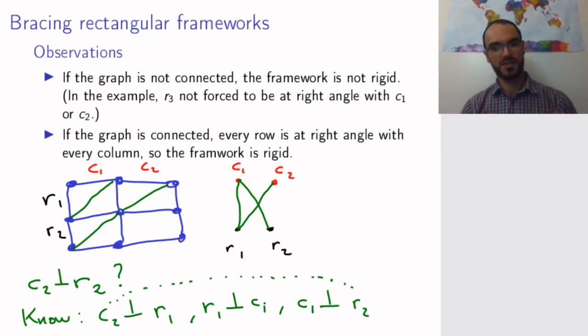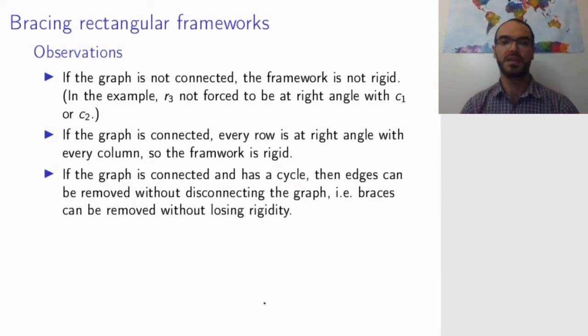But remember, I had a different question—the question about minimality. I don't want to add too many braces. Well, if the graph is connected and has a cycle, then I can remove edges without disconnecting the graph. Interpreting this in terms of my metalwork, I can remove braces corresponding to edges in my bipartite graph without losing rigidity. Rigidity corresponds to connectedness by the previous point.